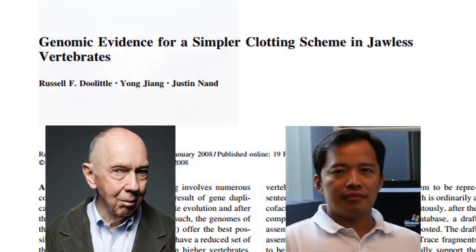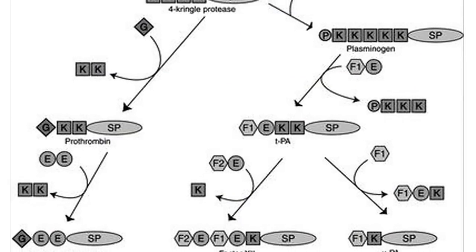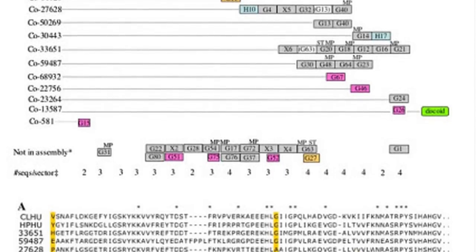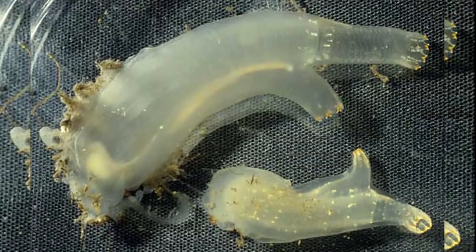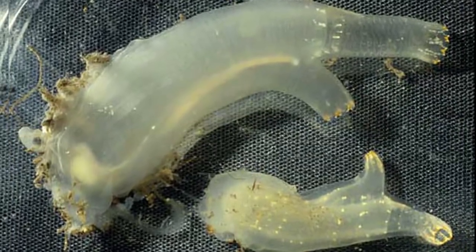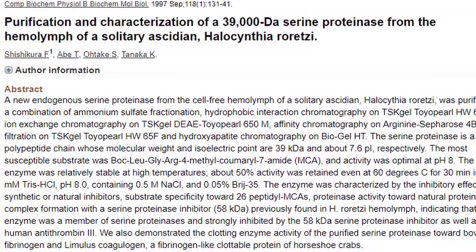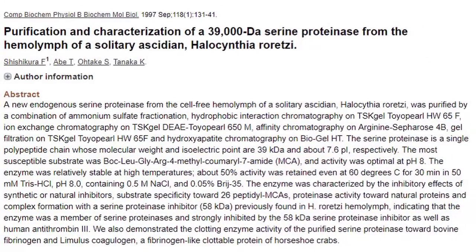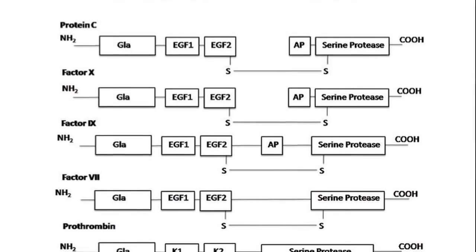In 2008, Doolittle and Young Jang conducted an analysis of puffer fish and sea squirts, discovering that thrombin itself is a variant of an enzyme sea squirts also possess, originating from the same genetic domains as the vertebrate factors. This enzyme does not serve the purpose of clotting in the sea squirt, but as demonstrated in a 1997 laboratory experiment led by Fumio Shishikura, it does catalyze mammalian fibrinogen into fibrin. This confirmed that all of the factors in the clotting cascade have their origins in already-available enzymes.